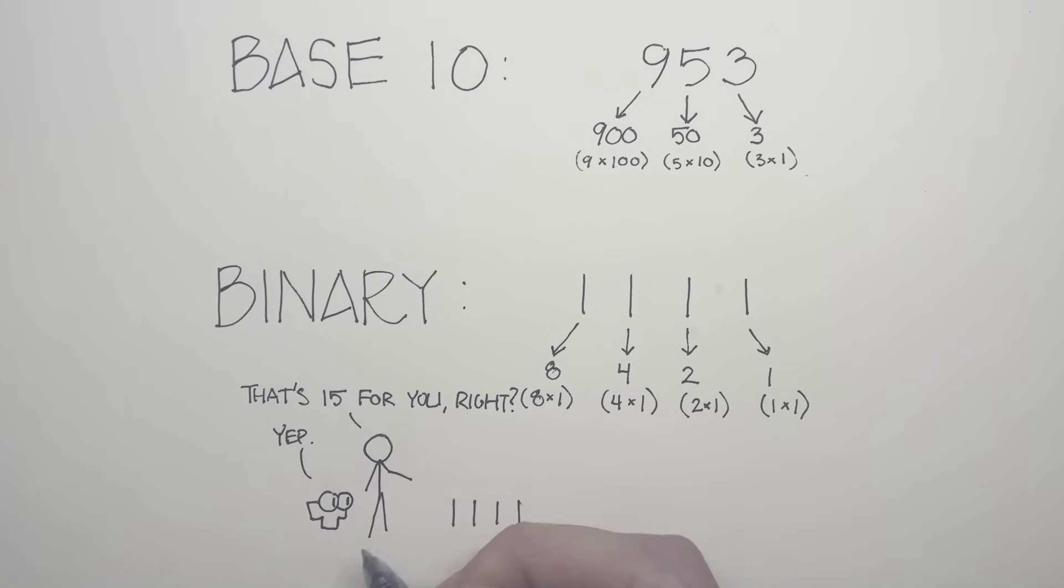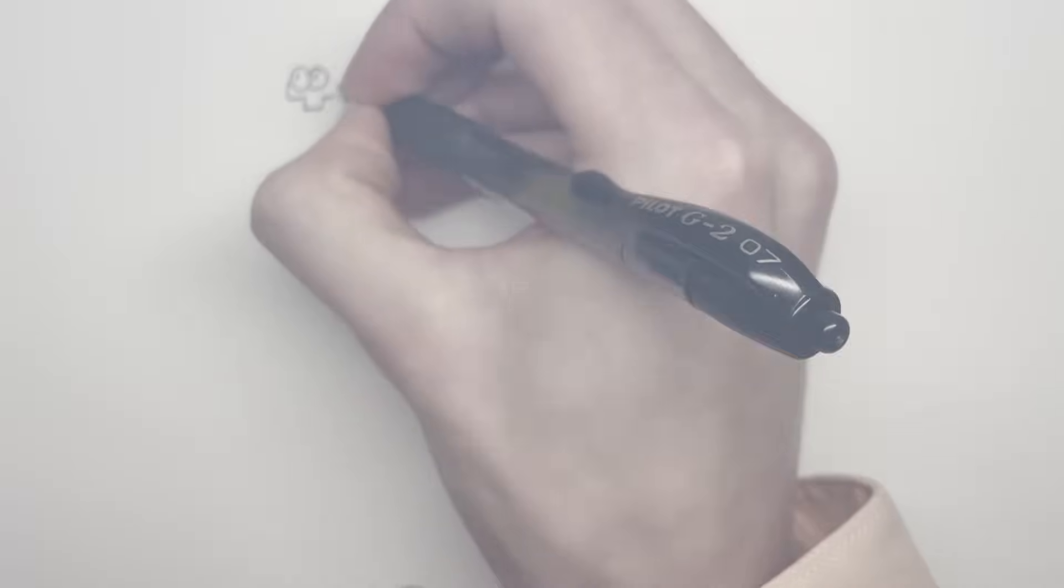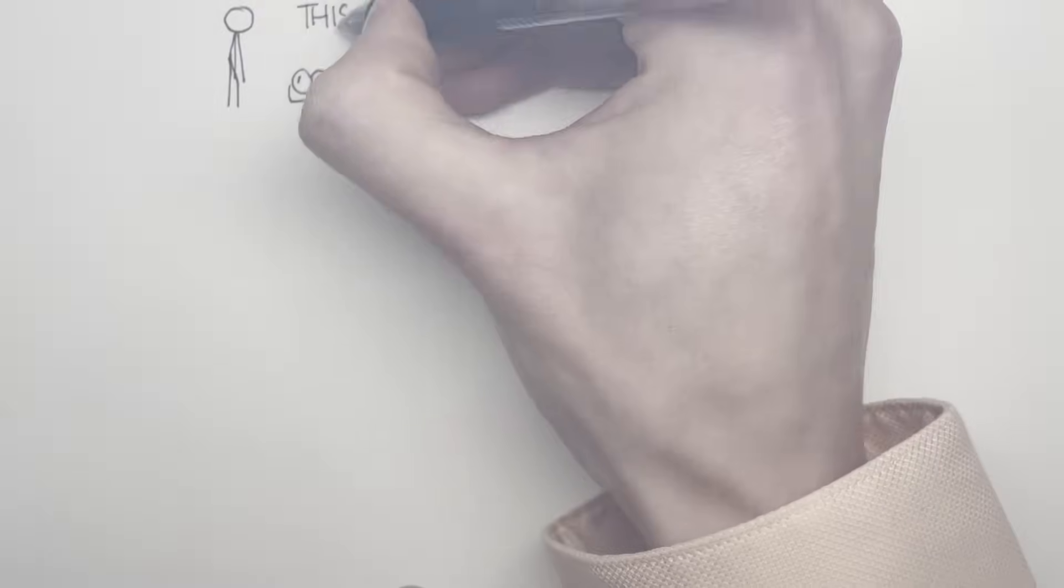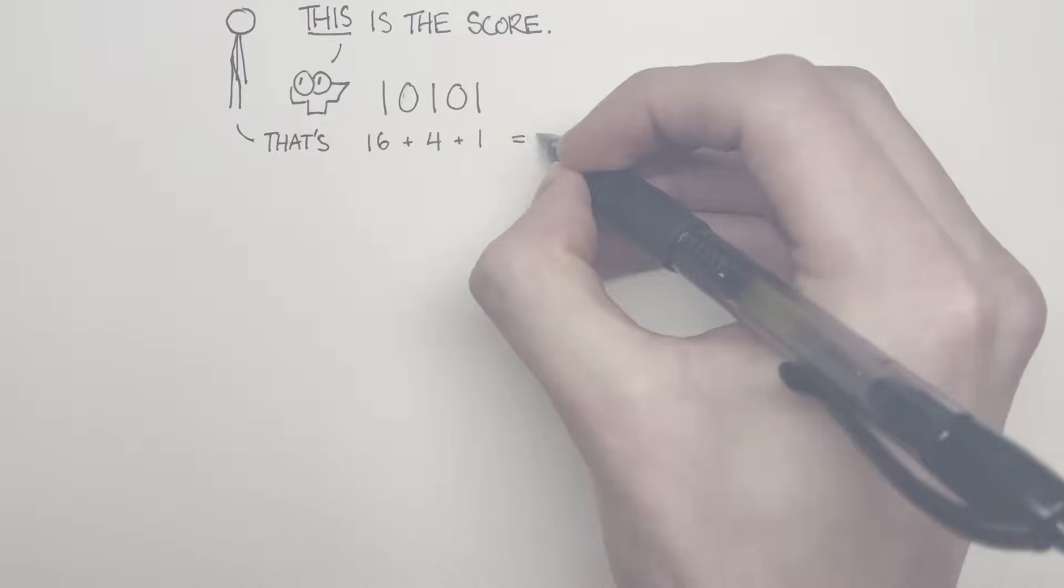So if we go ahead and look at the internal memory and see what the value is in the score, we would expect to see 1111. Except, what we really see in the memory is 10101. If we add that up, it is the number 16 plus 4 plus 1, which is 21, and that is most definitely not our score.